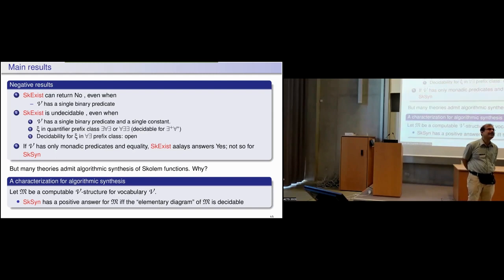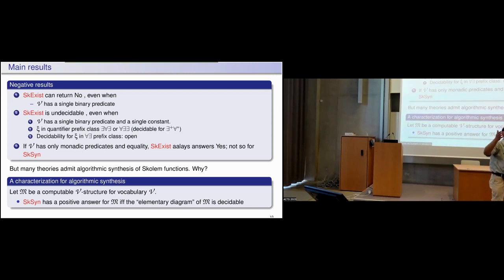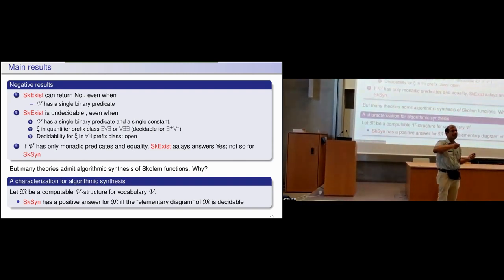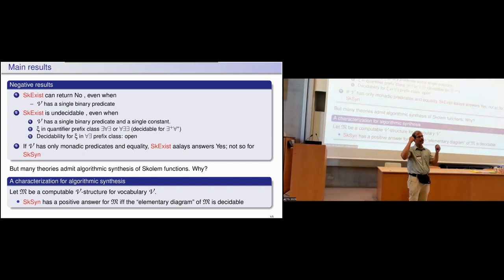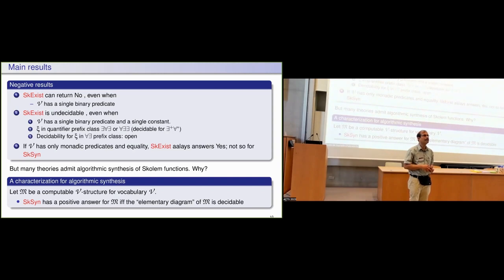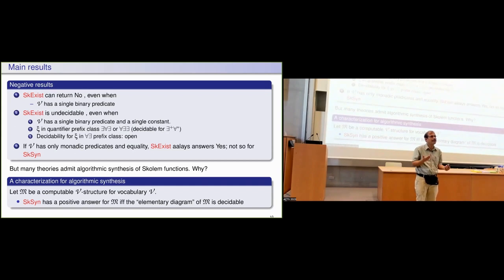At every step you invoke the decision procedure of the elementary diagram. If a solution exists you are guaranteed to find it — but this is only applicable when Skolem-exists is true, i.e., a Skolem function exists. If Skolem-exists is false, it does not make sense to synthesize a Turing machine that does not exist.